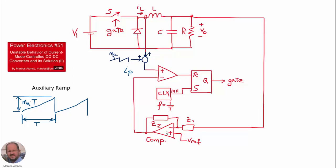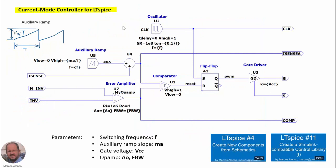This is the schematic in LTSPICE of our controller. Here we have the clock at the frequency f, and we have the auxiliary ramp. The auxiliary ramp is defined from 0 to a maximum value which is given by the slope MA divided by M.